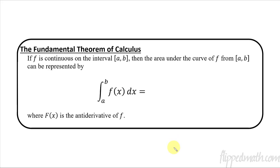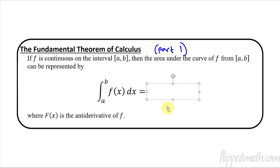Now it leads us to the fundamental theorem of calculus, part one. Remember earlier in the year I talked about the fundamental theorem of calculus, and we did part two — that's because most textbooks do this one first and then get to the other part. If f is a continuous function on the interval a to b, the area under the curve is this definite integral. Instead of doing summation notation, there is a fast way: you take the anti-derivative capital F, plug in the upper bound b, then subtract the anti-derivative with the lower bound a plugged in — and that represents the area under the curve.